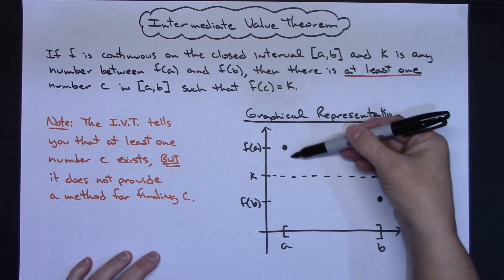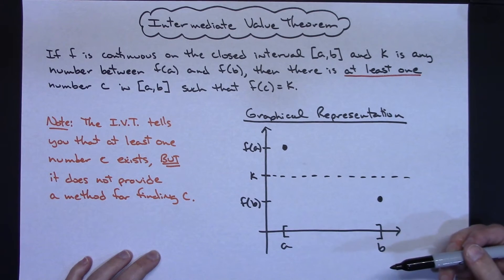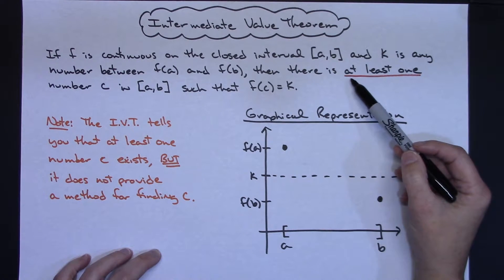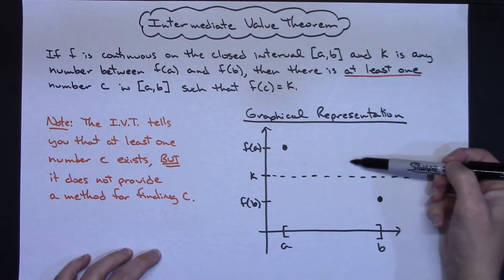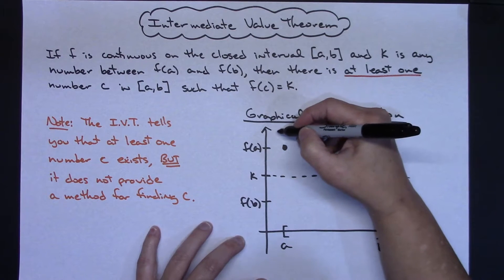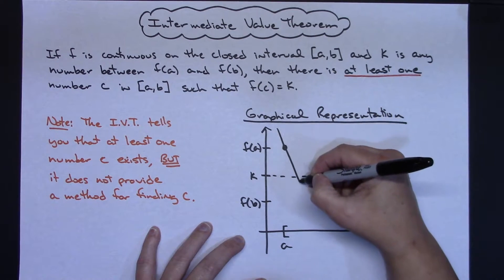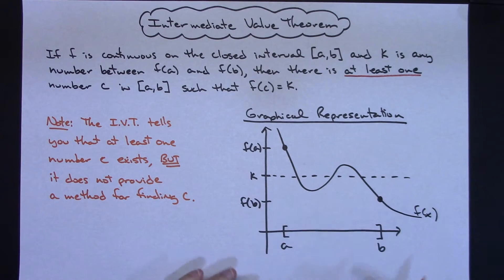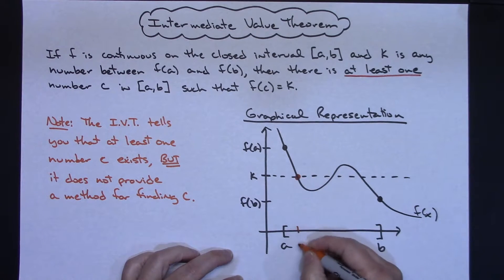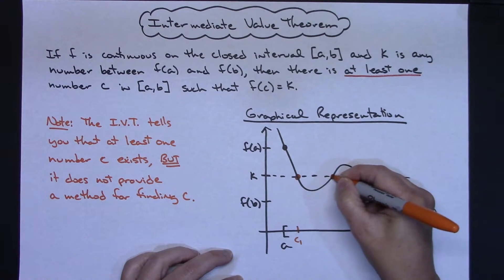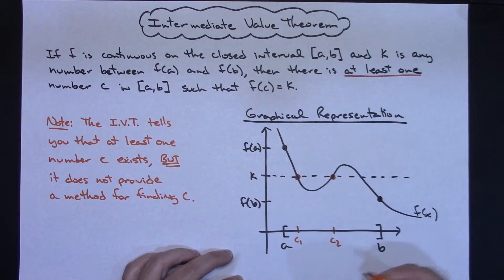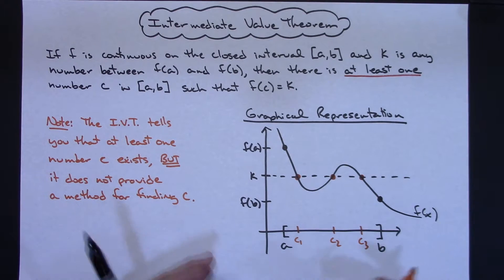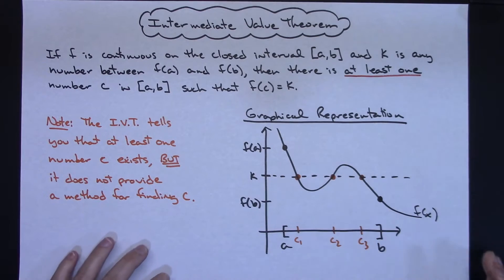If it's a simple function it could go straight down through both points and cross K at only one spot, because the only way to get from F of A to F of B is to cross K if K is in between those two values. But if the function has lots of curves, hills and valleys, it may cross more than one time. So maybe that's my F of X function — in this case there would be one C value, here a second C value, and here a third one where F of C equals K. The theorem guarantees at least one, but there could be more.